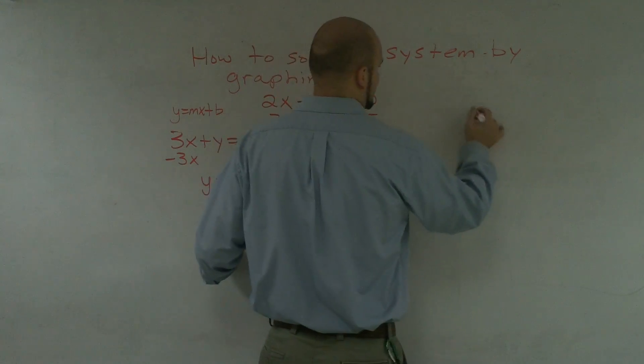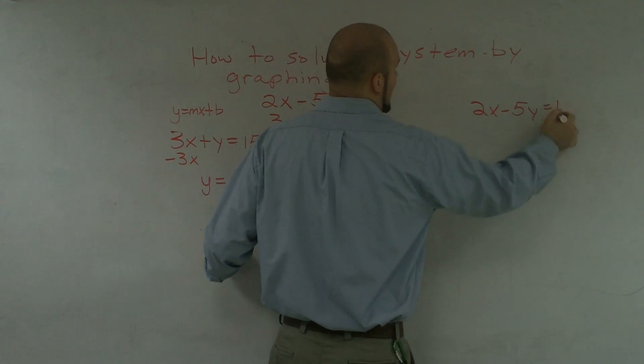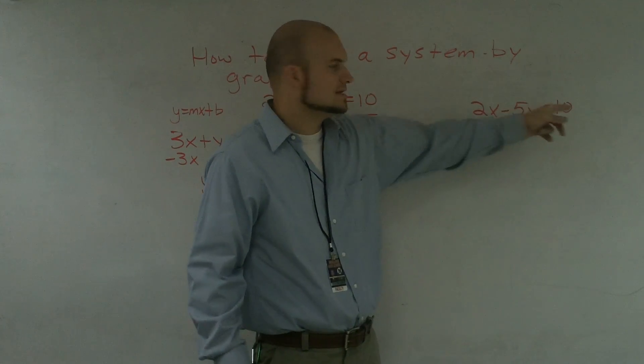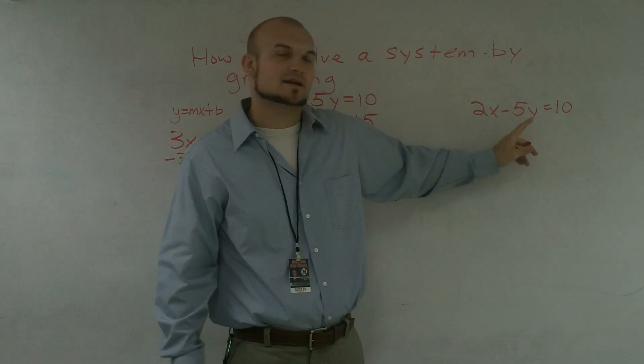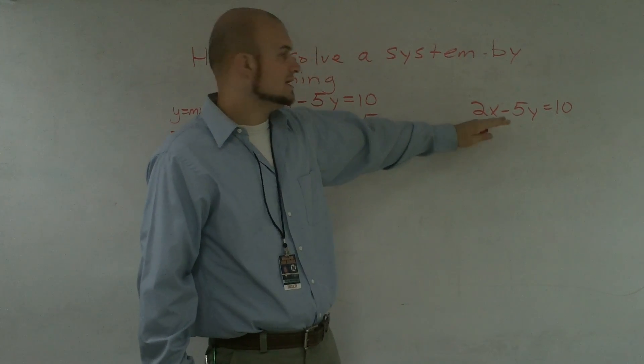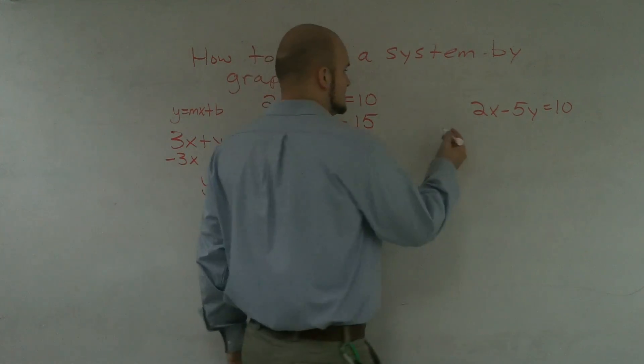This problem over here, I can still solve for y, and it won't be a problem for me. All I have to do is subtract a -2x and then divide by -5. However, another way to graph these is you can also find the x and y intercepts and then just connect them. So let's go and do that as well.